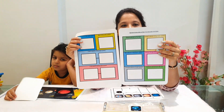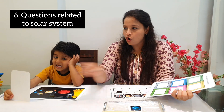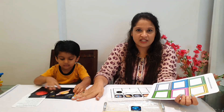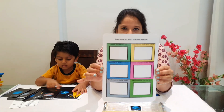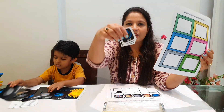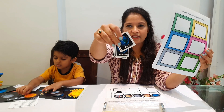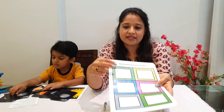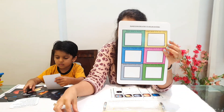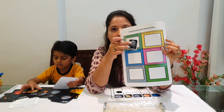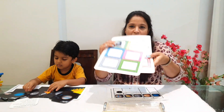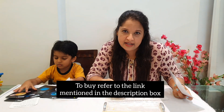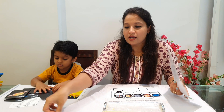Next is the question sheet about the solar system. After teaching through the facts sheet and the chart, you can ask your child to complete this question sheet using the cards provided in the kit. The parent's reference answers are also included. For example, the first question is 'Which is the closest planet to the sun?' and your child places the Mercury card as the answer.